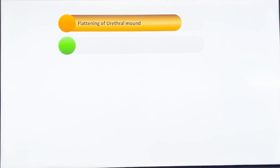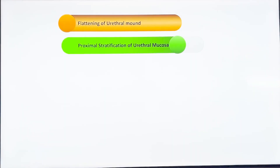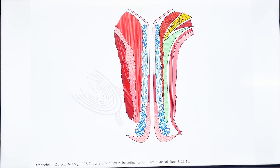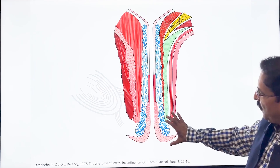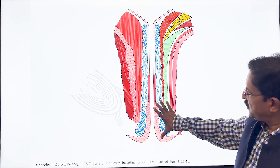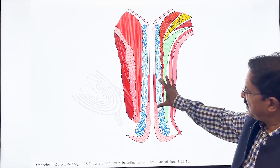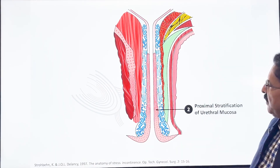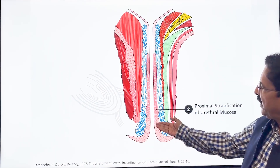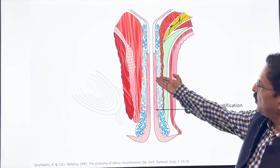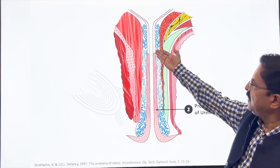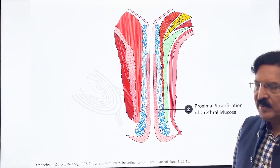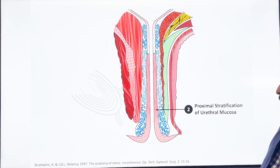The second change is that the mucosa of the urethra becomes more and more stratified. In a normal individual, only the lower portion is stratified squamous and the middle is pseudo-stratified. But following menopause, the stratification extends more and more proximally, and a greater part of the urethra becomes stratified.